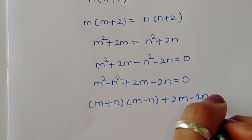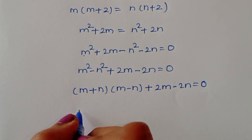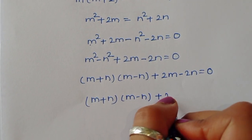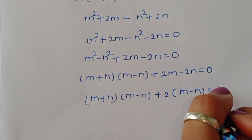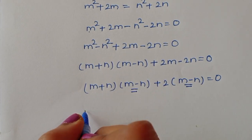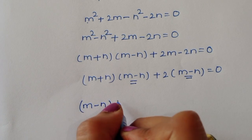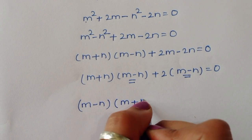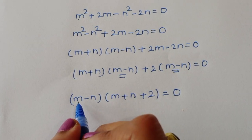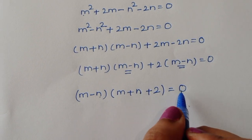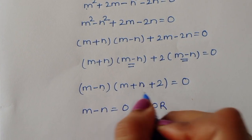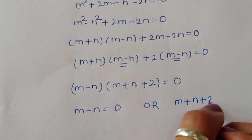Taking (m-n) as common factor: (m-n)[(m+n)+2] = 0. This gives us two equations: m-n = 0, or m+n+2 = 0.